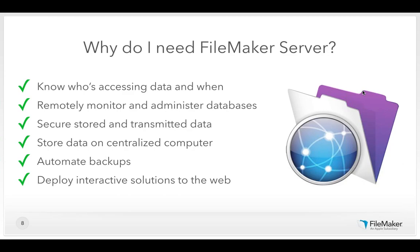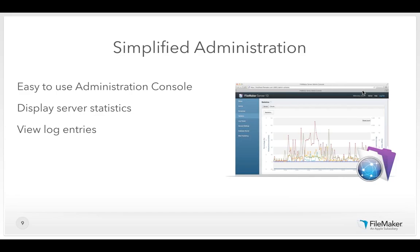Let's start with administration. In our example we started with a simple customer solution, but down the road I'll want an invoicing solution, inventory management, asset tracking, and document tracking. It becomes harder and harder to administrate all these databases with peer-to-peer, since I'd have to have them all open at the same time. With FileMaker Server, administration becomes very easy. Using the admin console — a web application in the browser — I can see and manage all the databases that are open, close or remove files, upload new ones, see the health of my server, and see who's logged in and when.